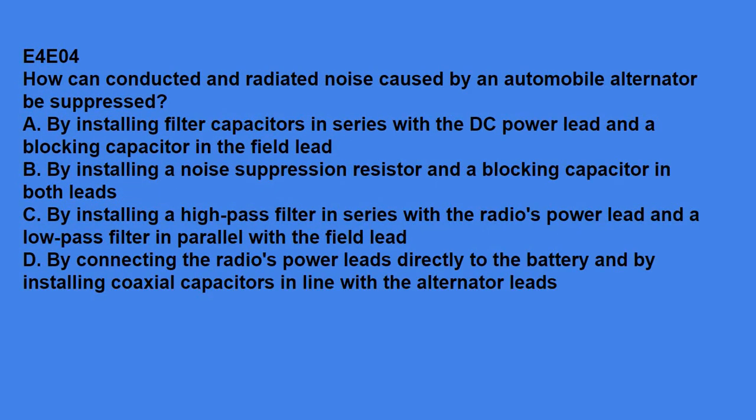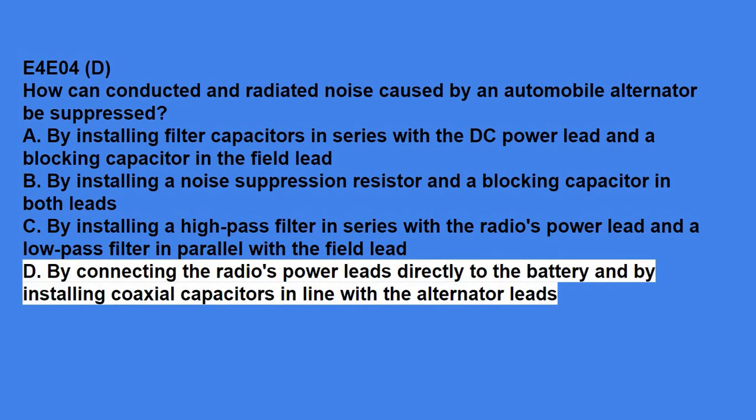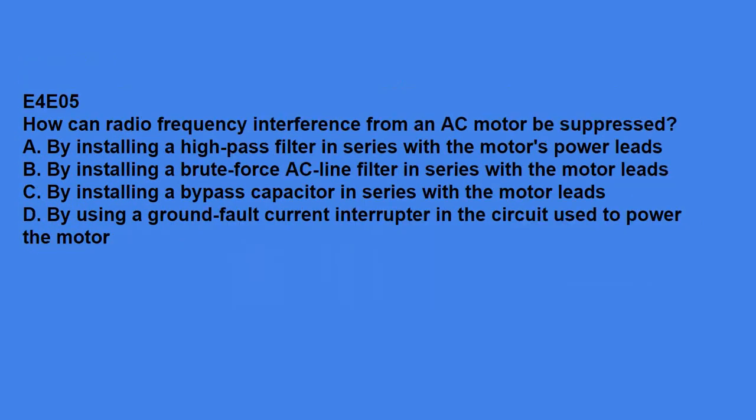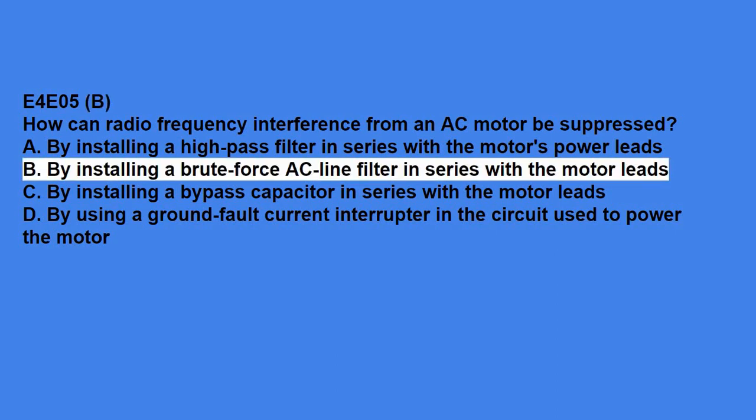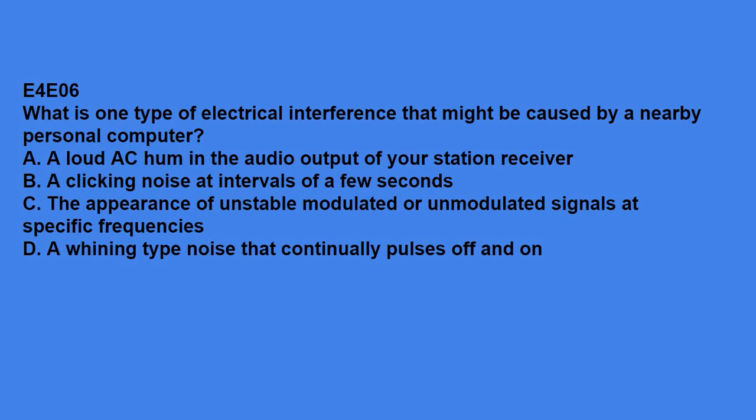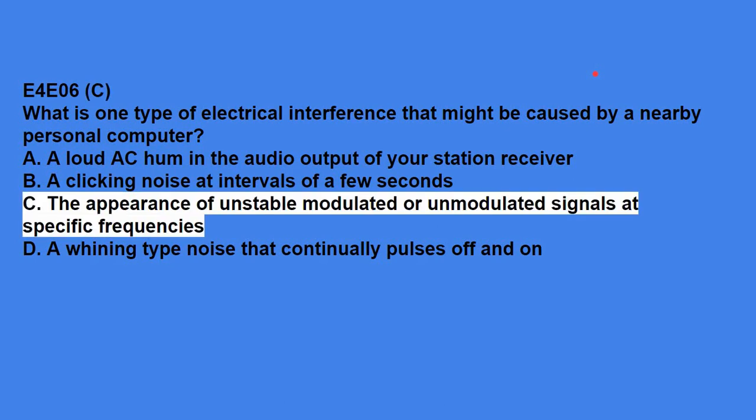E4E04, how can conducted and radiated noise caused by an automobile alternator be suppressed? Answer is, by connecting the radio's power leads directly to the battery, and by installing coaxial capacitors in line with alternator leads. E4E05, how can radio frequency interference from an AC motor be suppressed? By installing a brute force AC line filter in series with the motor leads. E4E06, what is one type of electrical interference that might be caused by a nearby personal computer? That answer is, the appearance of an unstable, modulated, or unmodulated signals at specific frequencies.